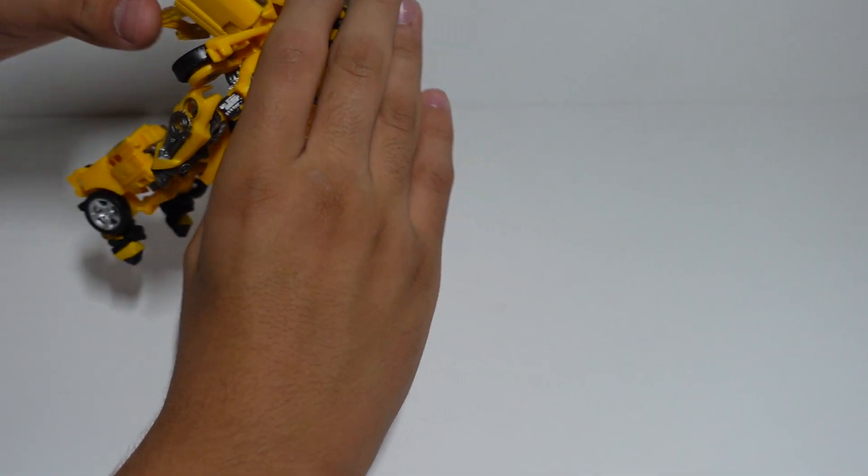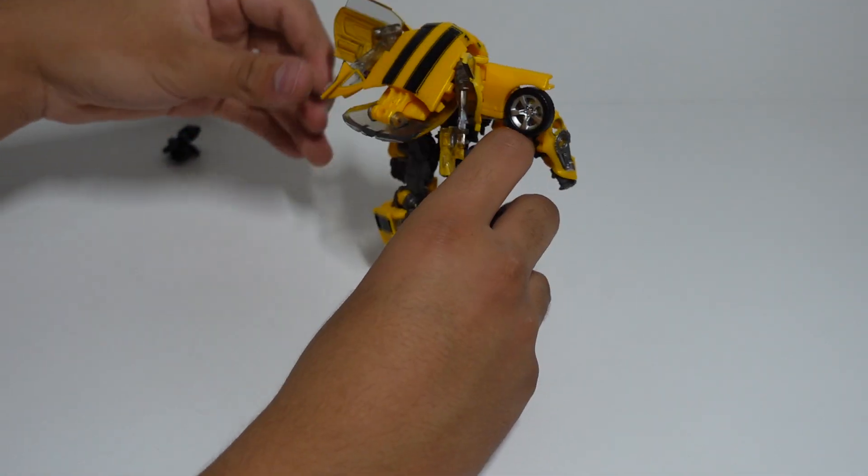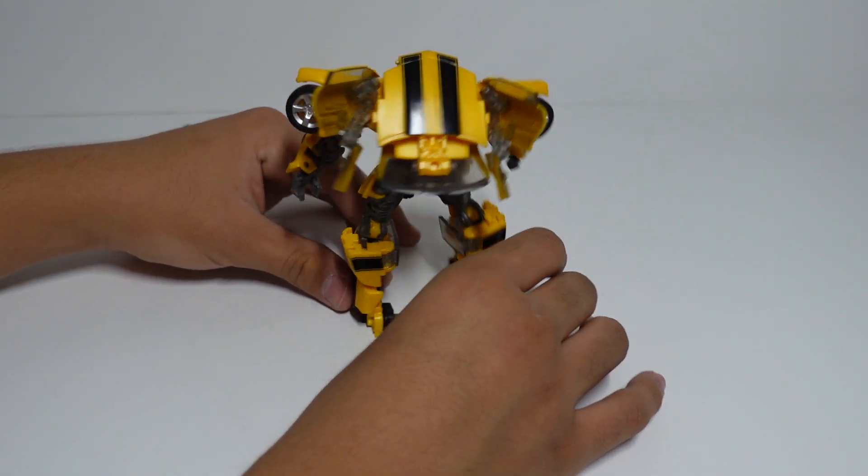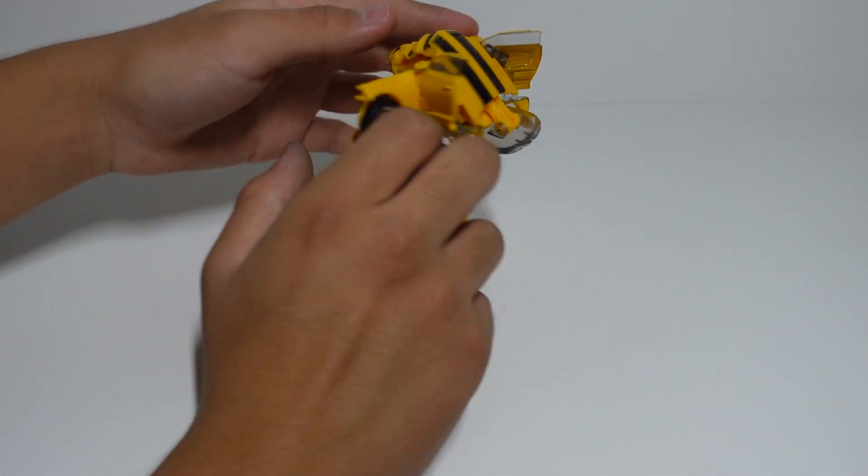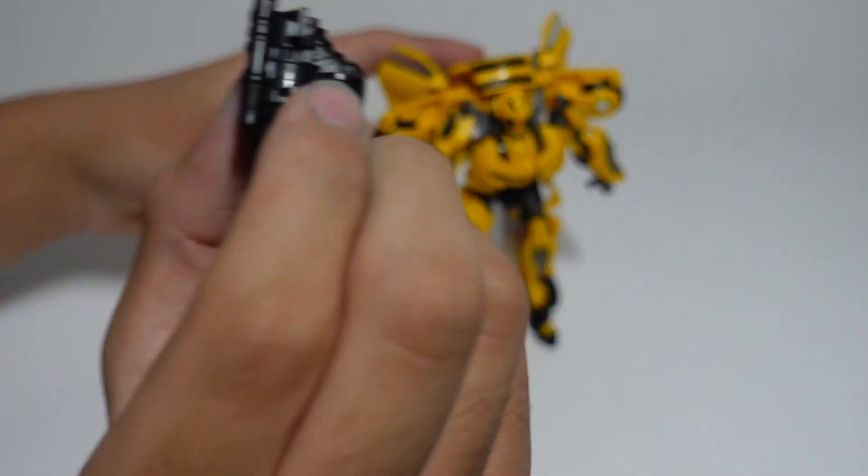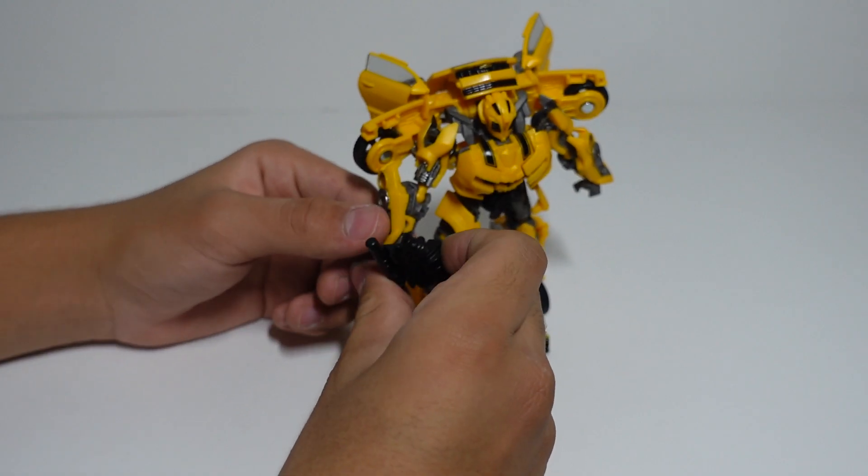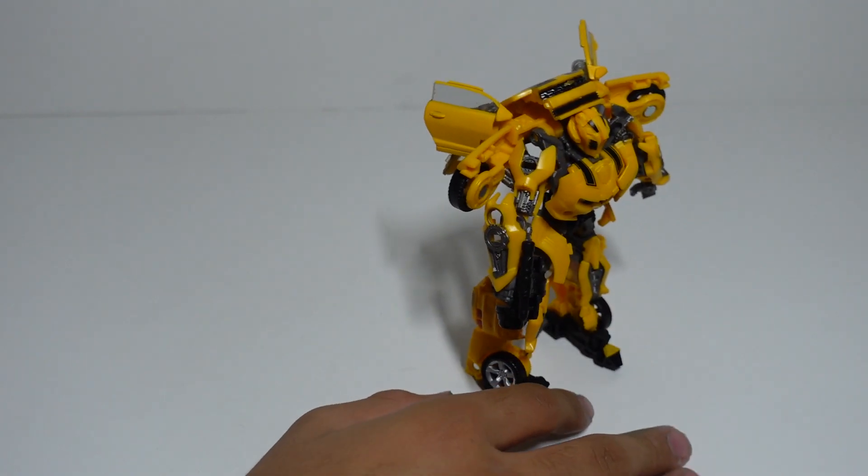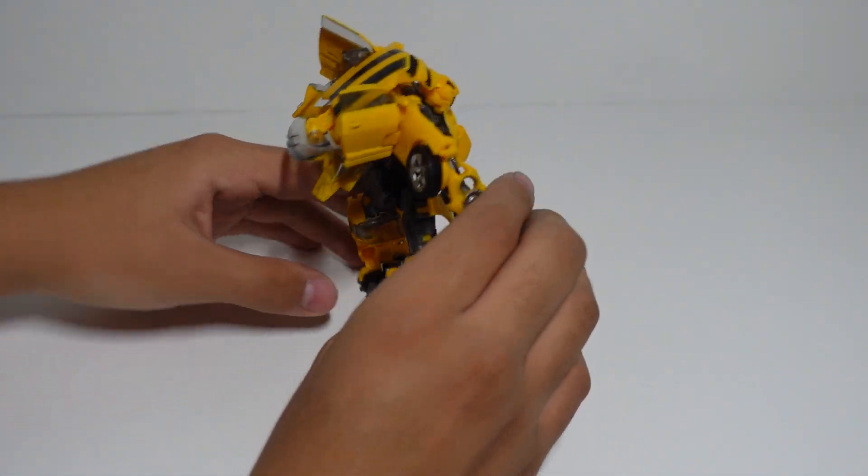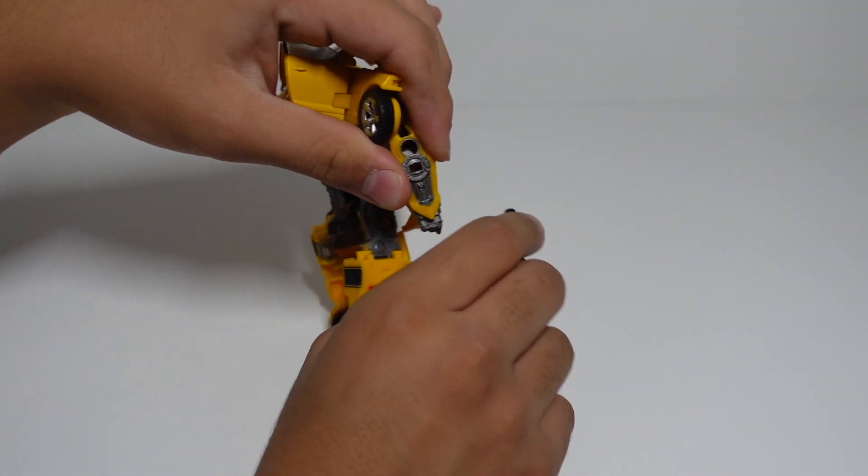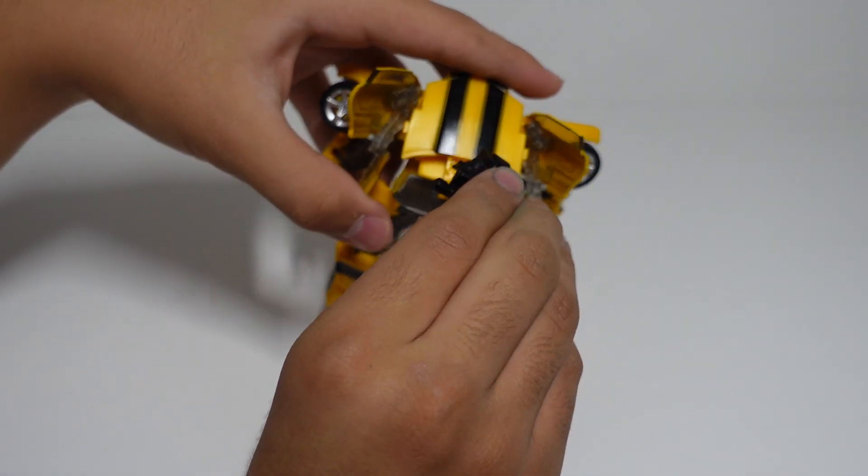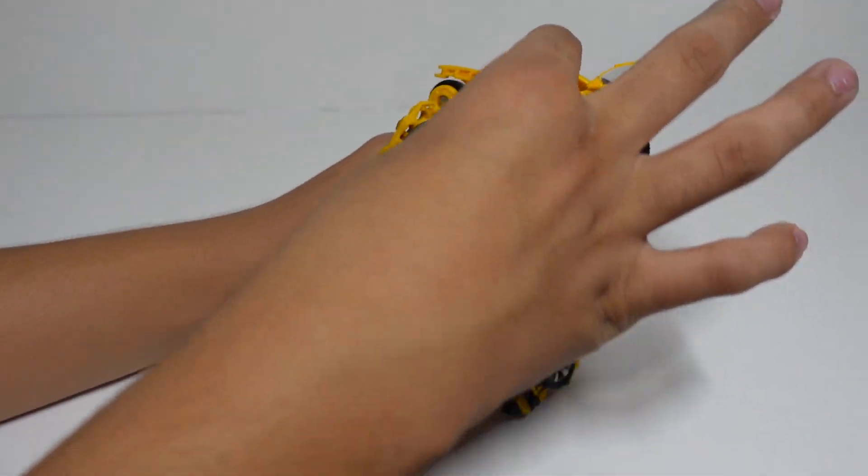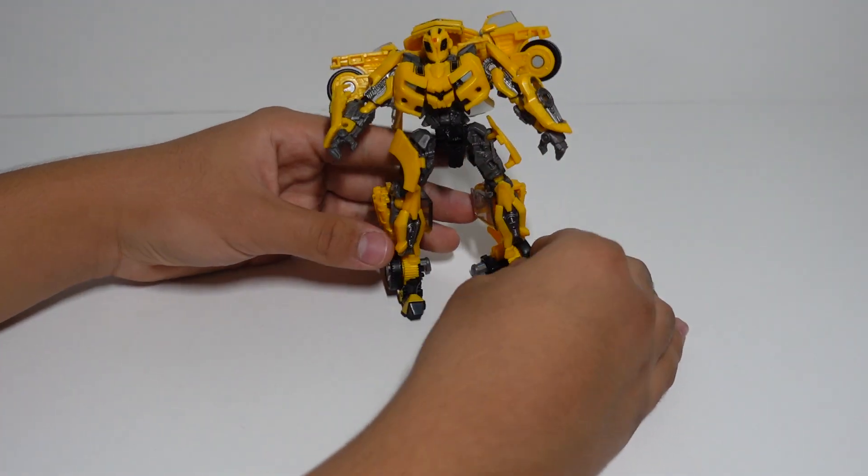And there you have Bumblebee. Bumblebee is now complete. Bumblebee is actually four, five inches, I believe, 4.5 inches. And then his little cannon, you could have the choice of putting it on his arm right here. Or you can put it right here, right over here. See?